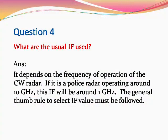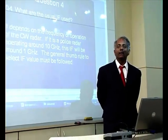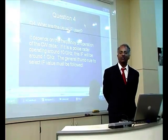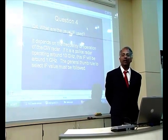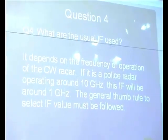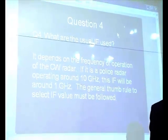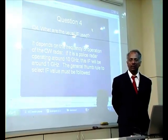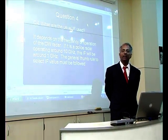Question: What are the usual IFs used? Answer: The IF is chosen so that the image frequency of the signal is definitely out of range of the operation — a thumb rule from communication engineering. In radar systems we use the same principle. For a 10 GHz radar, we normally choose the IF to be around 1 GHz — that means one-tenth of the RF signal input. In general, it will be in the range of one-third or one-fifth depending on the application.